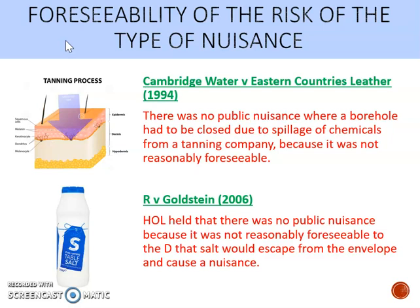The solvents eventually made their way into a borehole owned by Cambridge Water Company, which was used for supplying water to local residents. Unfortunately the water became contaminated and the borehole had to be closed. Cambridge Water sued in negligence, nuisance, and Rylands v Fletcher. On the nuisance issue, the court decided there was no public nuisance because it was not reasonably foreseeable that tiny spillages of solvents would result in a water borehole being closed down.